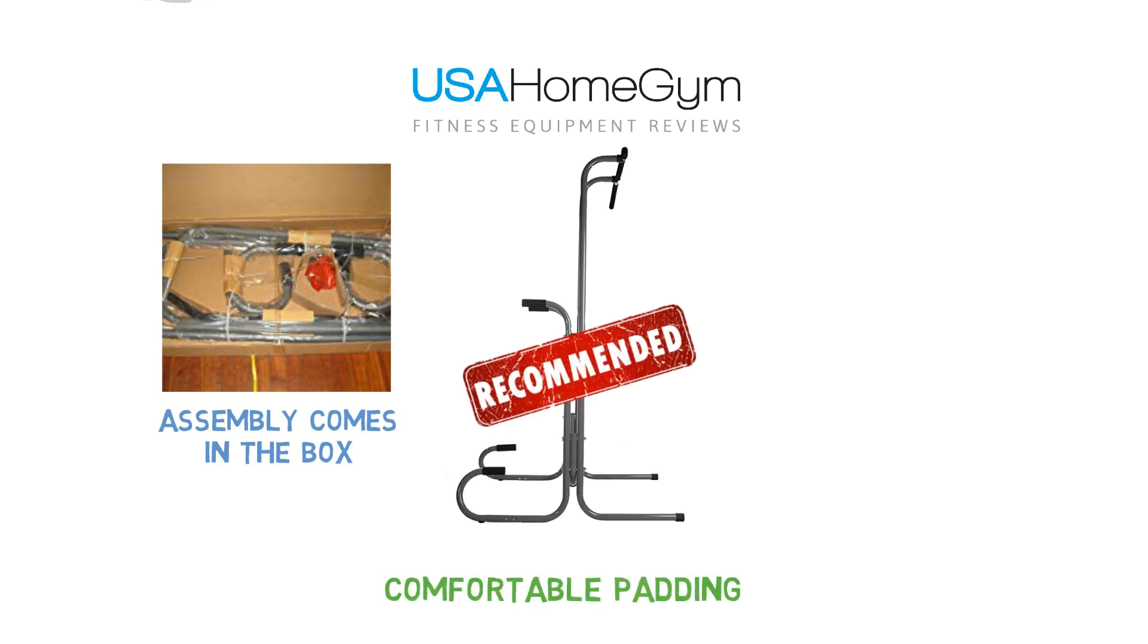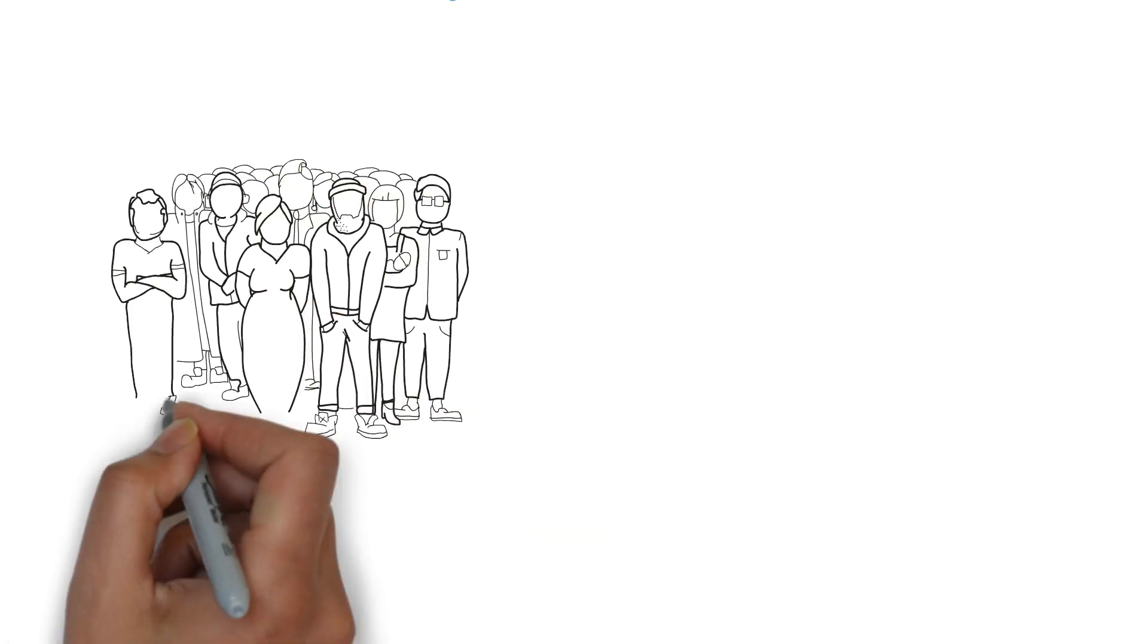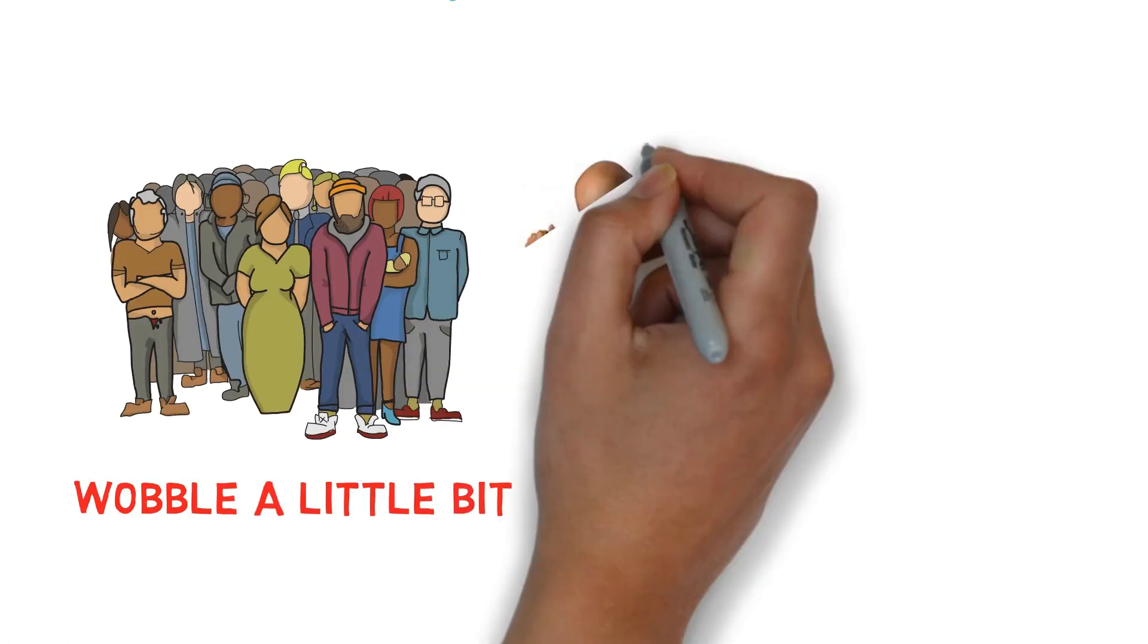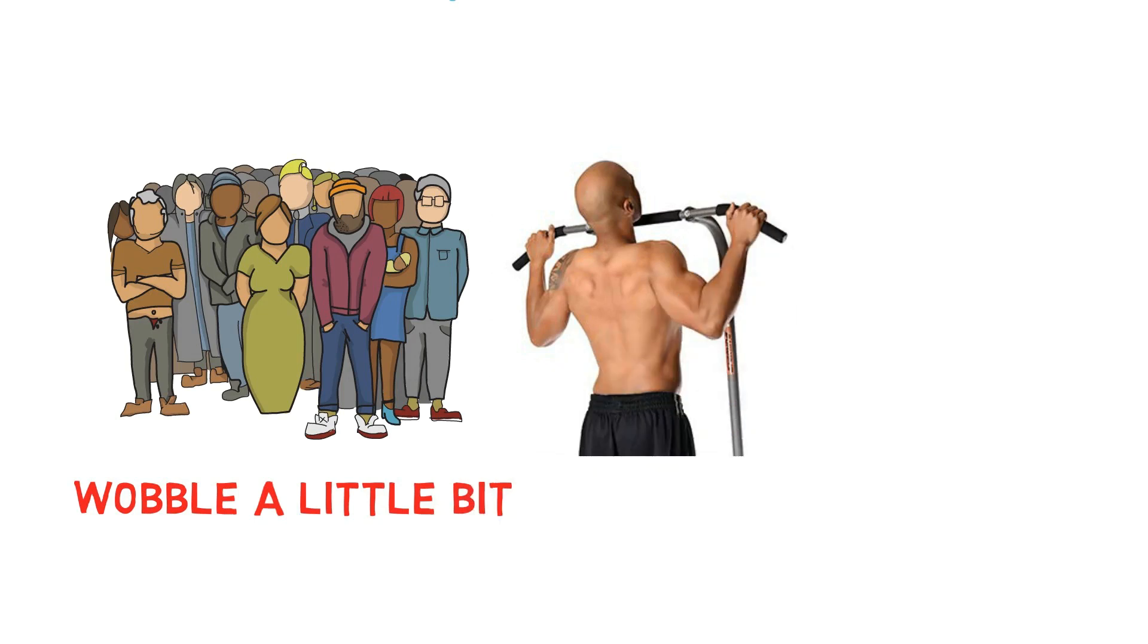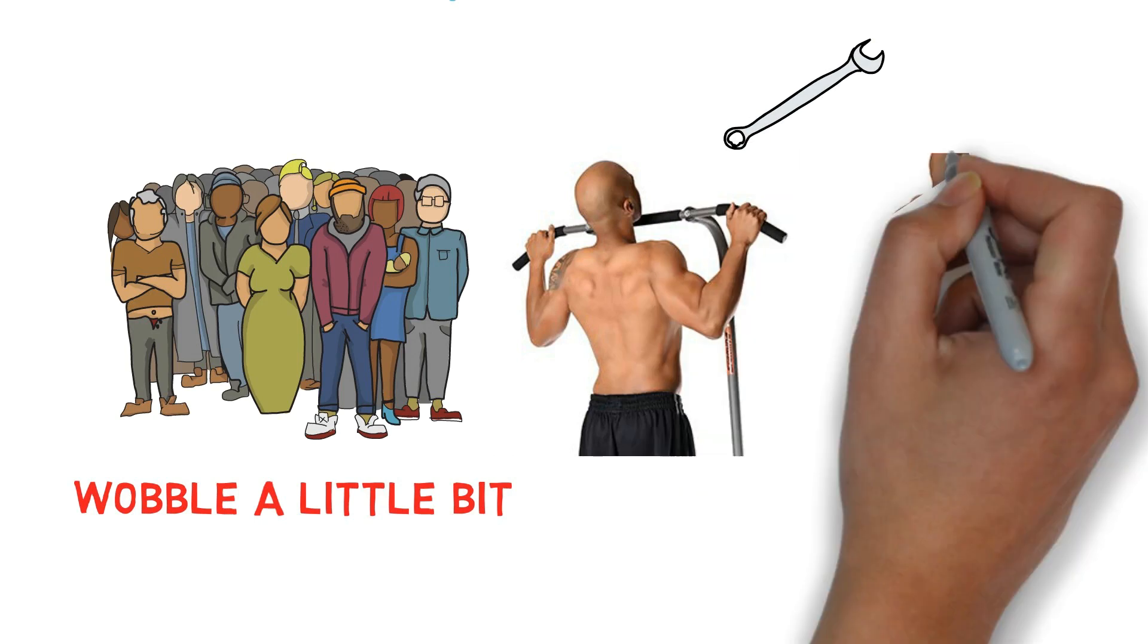The Stamina 1690 Power Tower has more than 1,000 five-star reviews on Amazon. The biggest complaint about the pull-up system is that it can wobble a little bit, especially if you weigh 200-plus pounds and your muscles are starting to tire. To counteract the wobble, consider using a socket wrench to really tighten the nuts.